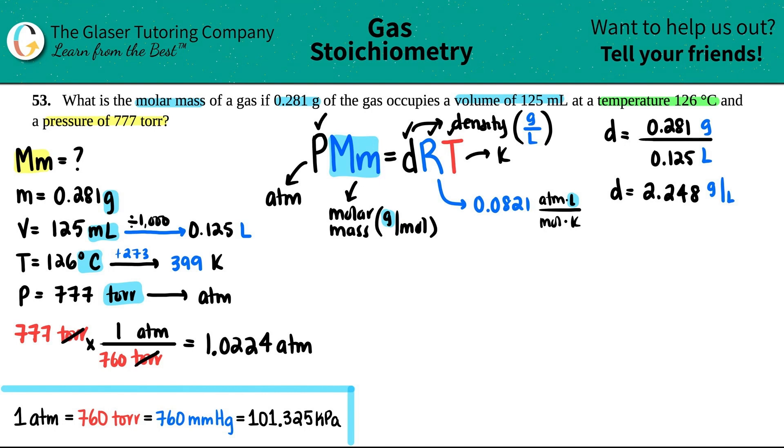So let's just plug it in. Pressure is 1.0224 times the molar mass, which is X, equals the density that we just found 2.248 times the R value of 0.0821. And then the temperature in Kelvin, we found out to be 399.